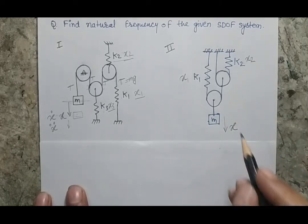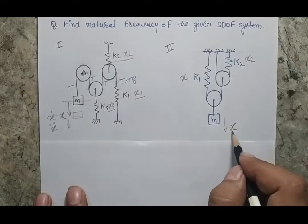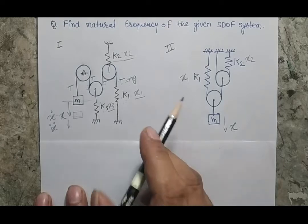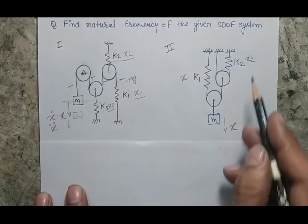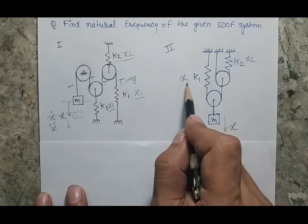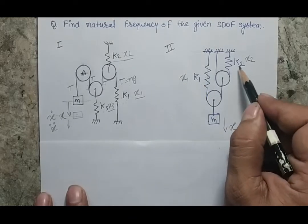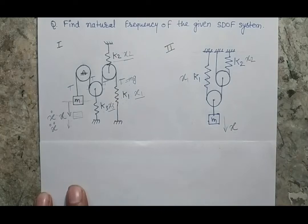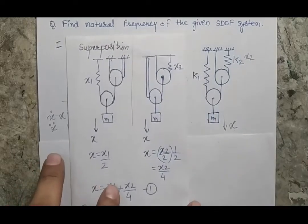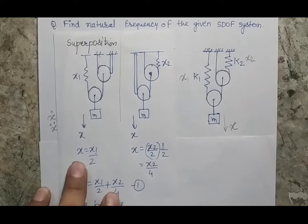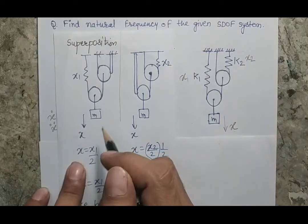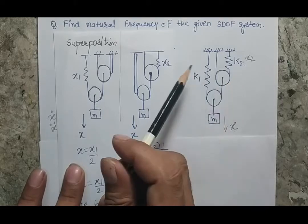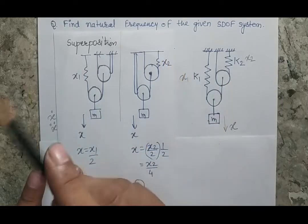If I am giving a displacement X to mass M, that X will be a combination of the deformation in the first spring and the second spring. So if I am assuming the deformation X1 in the first spring and the deformation X2 in the second spring, there must be a relation between X, X1, and X2, which can be identified by applying the superposition method. In the superposition method, we sequentially consider only one spring as free and all other springs are considered as a rigid bar.